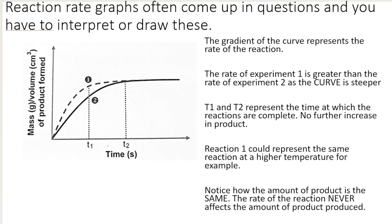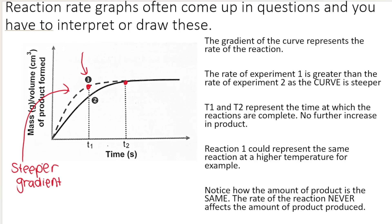In this graph, I am comparing two different experiments. Curve number one — the dotted line — represents one reaction, and curve number two represents a second reaction. Reaction number one reaches completion and flattens out at T1, but reaction number two — the solid line — starts to flatten out at T2. Reaction number one has a steeper gradient. You can see the dotted line is more steep than the solid line, meaning reaction number one has a higher rate of reaction.